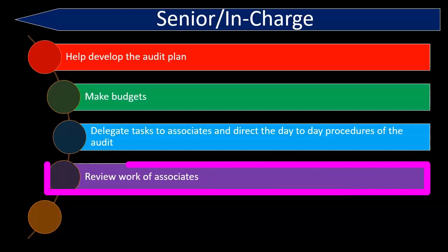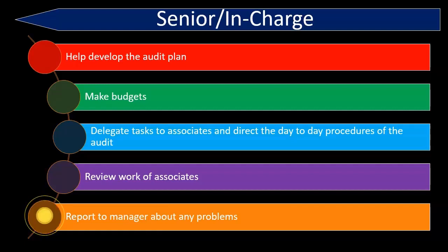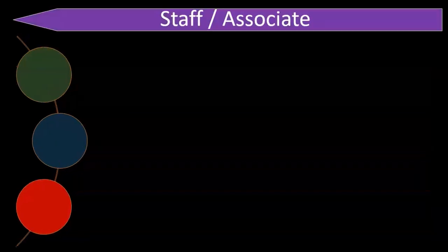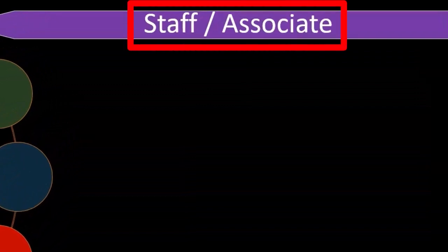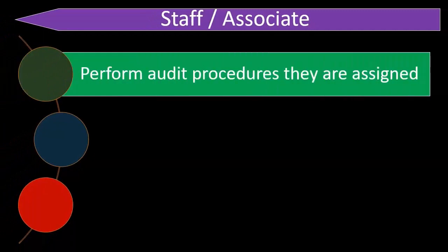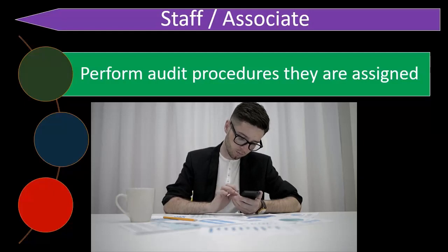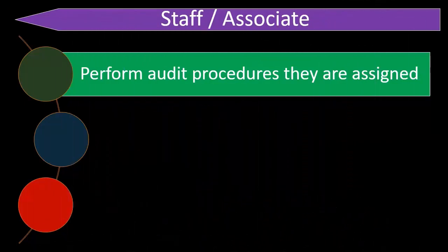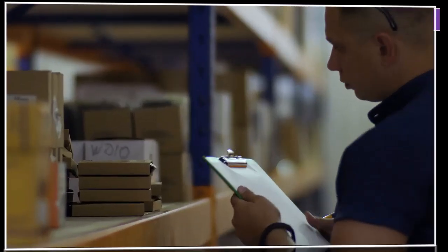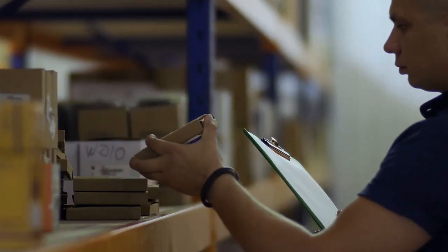The senior in-charge manages the day-to-day activities and reviews the work of the associates below them, reporting to the manager above. Then we have the staff and associates — the lowest level — who perform the audit procedures they are assigned. This typically includes footing columns, adding up figures, and counting inventory — tasks that can be delegated to staff-level personnel.